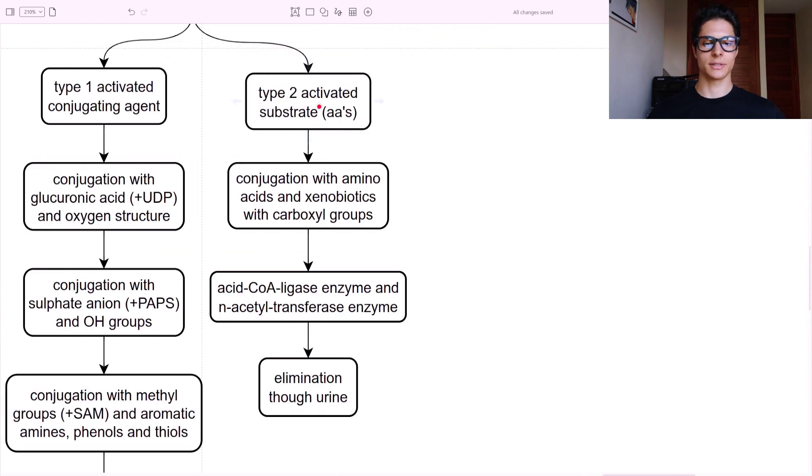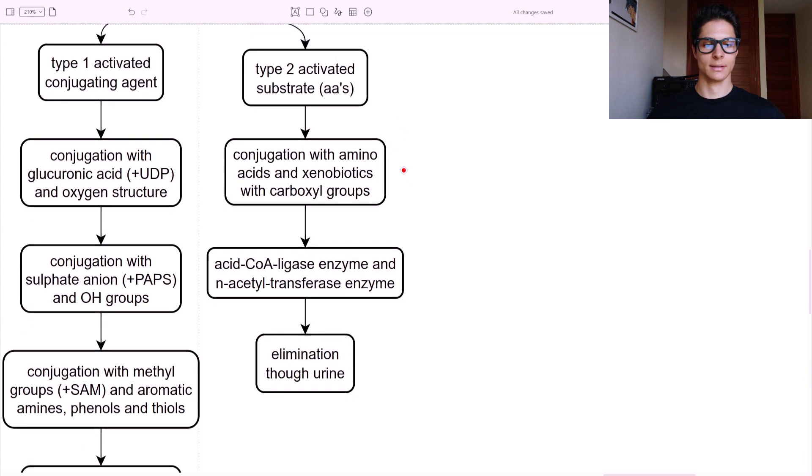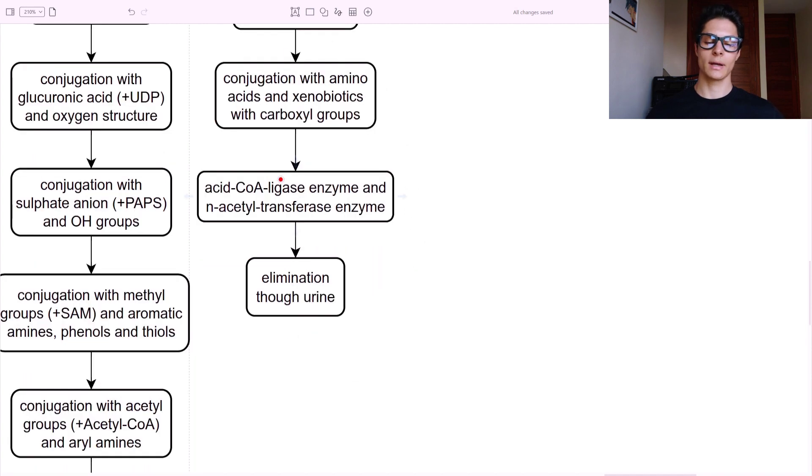Type two - the substrate is activated, mainly amino acids. So there's a conjugation with amino acids and the xenobiotics with carboxyl groups. Or we can have an acid-CoA ligase enzyme and an N-acetyltransferase enzyme that would do the job for us.